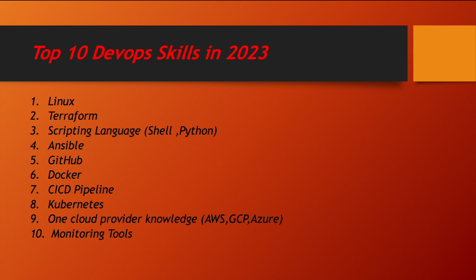The most important part of all these DevOps skills is monitoring. Once your complete infrastructure is deployed, how are you going to monitor it? Monitoring tools are one of the important building blocks of your DevOps skill set. I recommend you start learning monitoring tools. We are going to have monitoring tool videos soon as well — tools like Prometheus, Grafana, and Alert Manager will be uploaded on our YouTube channel.